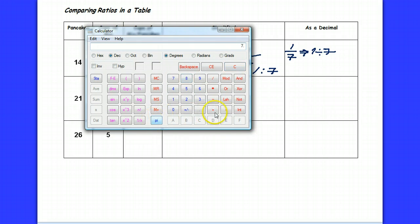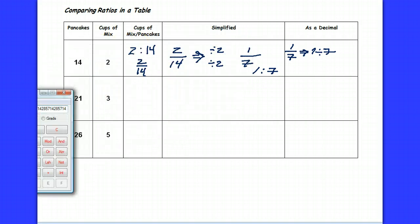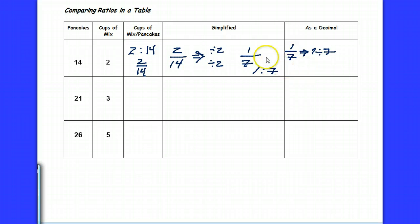The decimal equivalent of 1 divided by 7 is going to be .1428. We'll stop there at .1428. It's the decimal equivalent of 1 seventh.